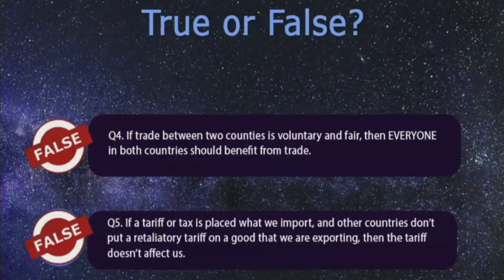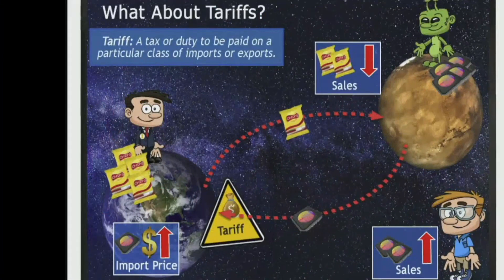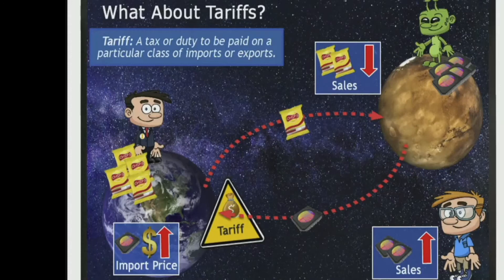Now let's look at question 5. True or false: if a tax or tariff is placed on what we import and other countries don't put a retaliatory tariff on a good that we are exporting, then the tariff doesn't affect us. Let's examine why the answer to that question is false. Suppose there's a tariff on imported memory chips. Due to the tariff, the price of memory chips will go up and Joe will buy fewer memory chips from Martians.